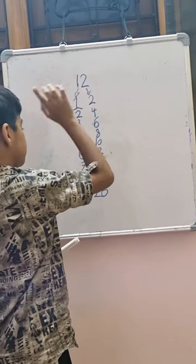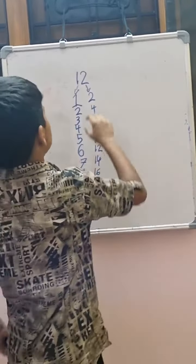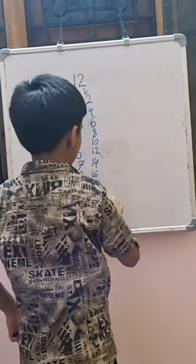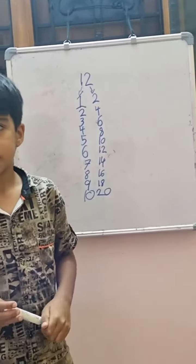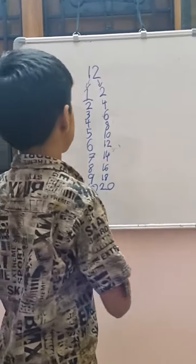For one table we should write 1 to 10 numbers, and for two tables we should write 2, 4, 6... 20—skip counting by 2. Let's start.